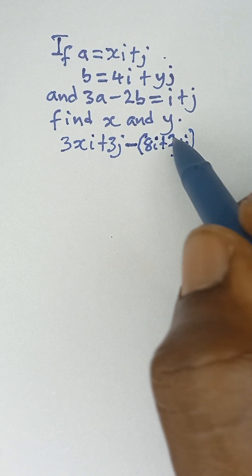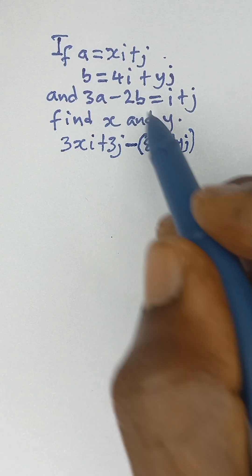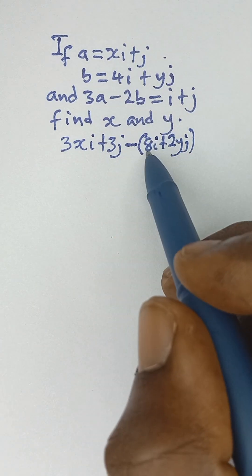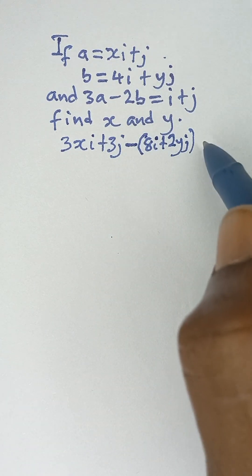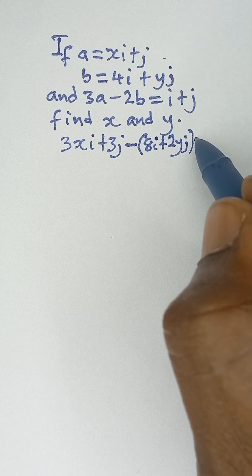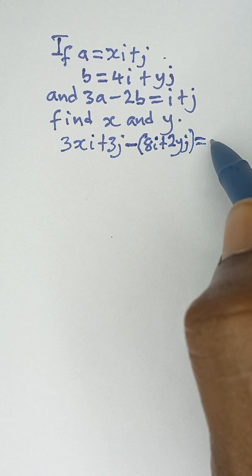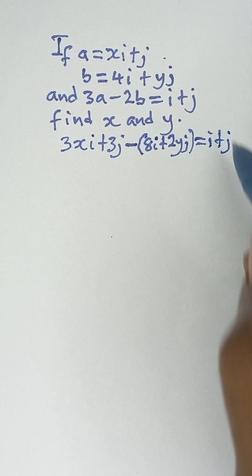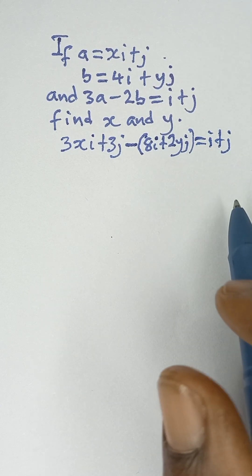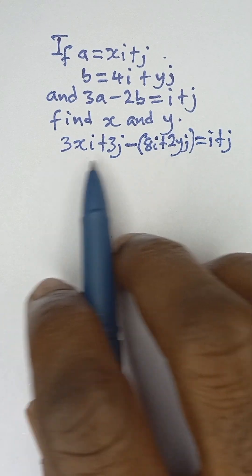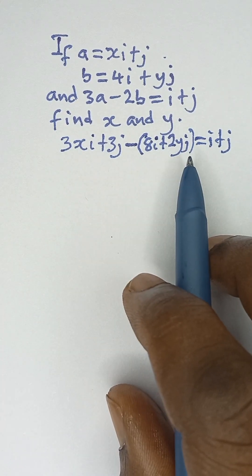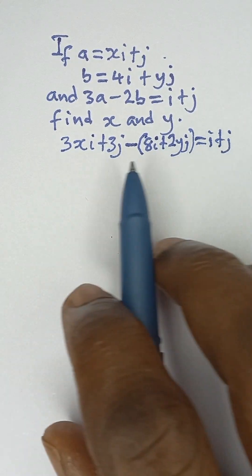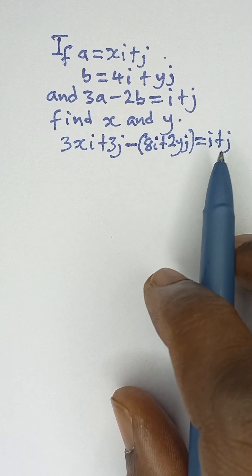We are told that 3a minus 2b — we have obtained 2b — and everything is equal to i plus j. Now we can expand these brackets and compare the left and right hand side in order to obtain the values of X and Y.